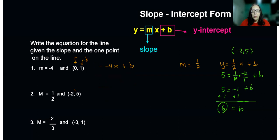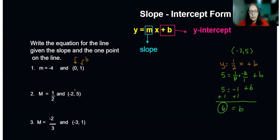In the next problem, we are given the slope: negative two-thirds. So we write m equals negative two-thirds, and right away write the equation with m in there: y equals negative two-thirds x plus b. Remember, there's no sign between the negative two-thirds and the x, so that means multiplying.